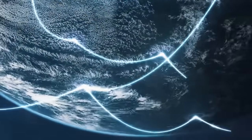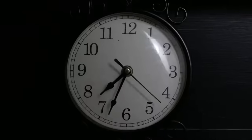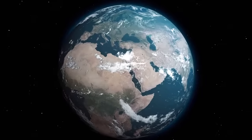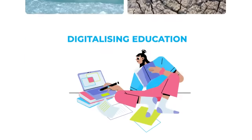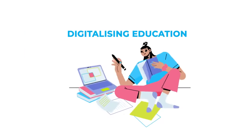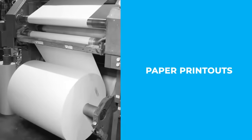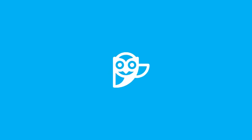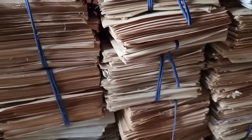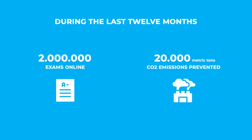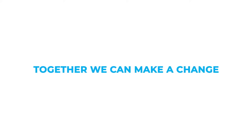The second goal is related to adopting urgent measures to combat climate change and its effects. By digitalizing education, we contribute to avoiding emissions associated with travel and paper printouts. SMAO has helped carry out over 2 million exams online, saving tons of paper and preventing almost 20,000 metric tons of CO2 emissions. Together, we can make a change.